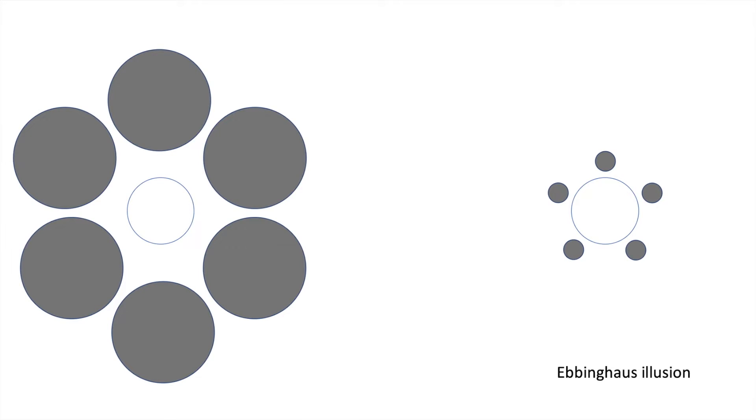The Ebbinghaus illusion is another good example to explain the malfunctioning of the human brain. Which one of the blue circles seems bigger? The right one, correct? We can exchange the circles with moons. The moon to the right, surrounded by smaller balls, appears a bit larger, correct? They have the same size.